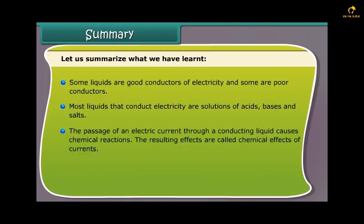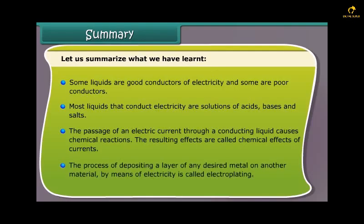The passage of an electric current through a conducting liquid causes chemical reactions. The resulting effects are called chemical effects of currents. The process of depositing a layer of any desired metal on another material by means of electricity is called electroplating.